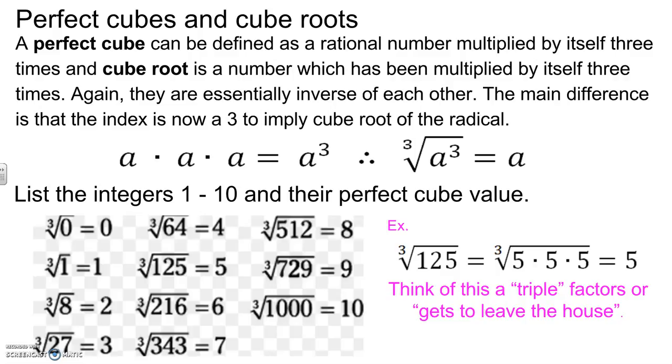Again, going back to our example. Think of this as a triple. So inside my house, I have 125. But 125 is really 5 times 5 times 5. So this group of three factors out to be 5. 5 cubed equals to 125 to bring that back full circle.